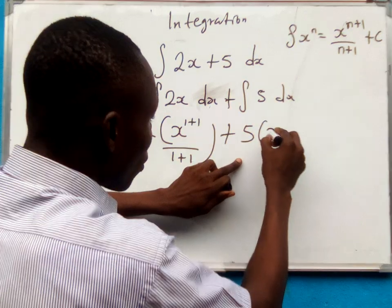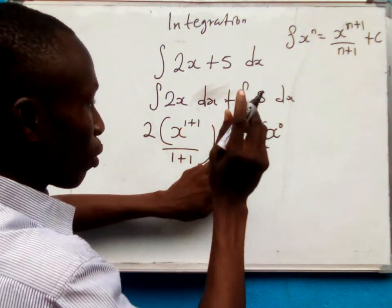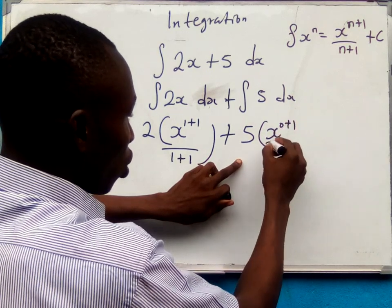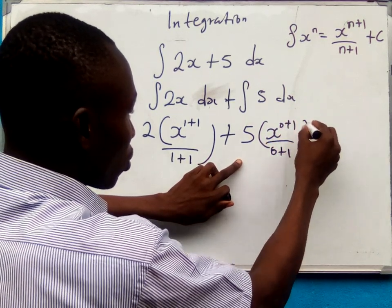Do you know that x to the power of 0 is the same as 1. So 1 times 5 is 5. Now if you integrate it with respect to x, it will be x^1 all over 0 plus 1.